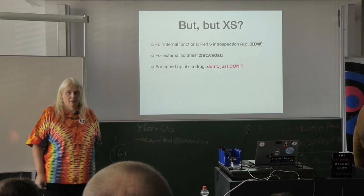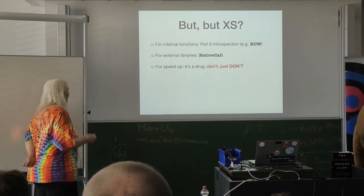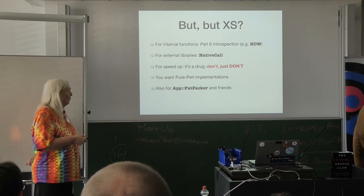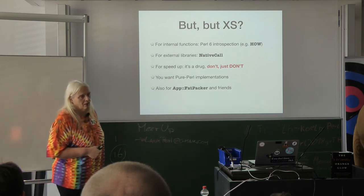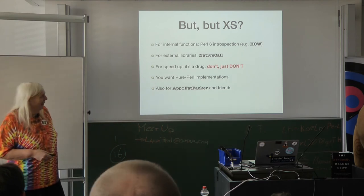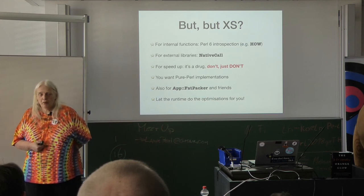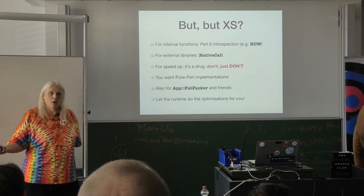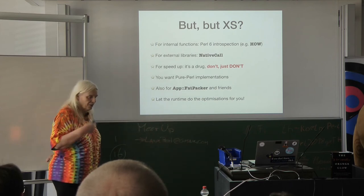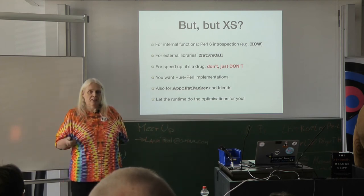If you're using XS for speed, I would say: stop. It's a drug. We want pure Perl implementations — not just for moving to Perl 6, but also for things like App::FatPacker and friends. Talk to Matt Trout about this; he agrees with me on that point. The idea is that the runtime should do the optimizations for you — let the runtime figure out which parts of the code are hot and which are not. Jonathan will be talking this afternoon about how the optimizations in MoarVM can actually help you make things run faster.